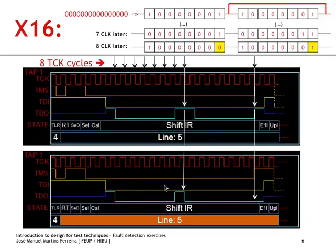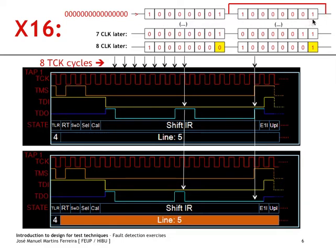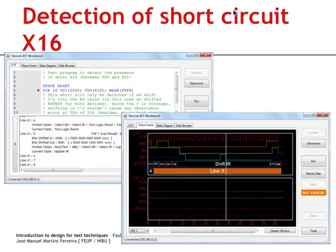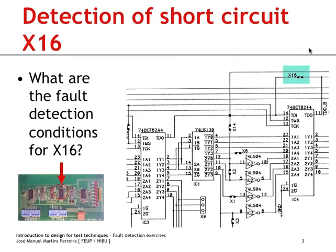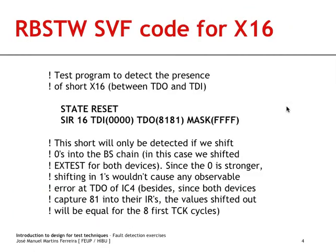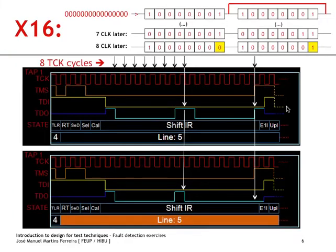To facilitate understanding, I have another slide showing this difference in more detail. After a capture instruction register state, which loaded 8.1 into the two instruction registers, this is the short circuit condition affecting the device on the right. We have 8.1 in the instruction register of this device and 8.1 in the other, with the short circuit condition present — that is what is represented here.